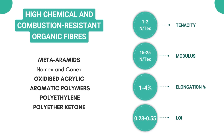Moving forward, the third category is high chemical and combustion resistant fibers. These are for specific chemical and fire-resistant applications, so we also measure a property called LOI — limiting oxygen index — which is the minimum fraction of oxygen in nitrogen necessary to sustain burning. The higher the LOI, the more oxygen is required to start burning. Examples include meta-aramids, Nomex, oxidized acrylic, aromatic polymers, and polyether ether ketone. Tenacity ranges from 1 to 2 newton per tex, modulus from 15 to 25, elongation 1 to 4, and LOI is 0.23 to 0.55.